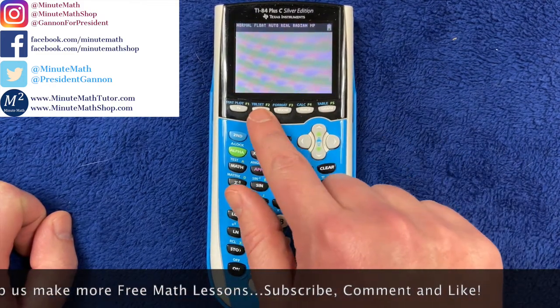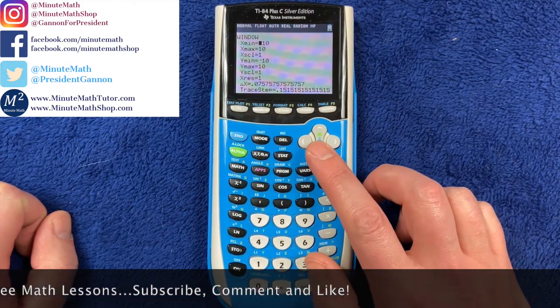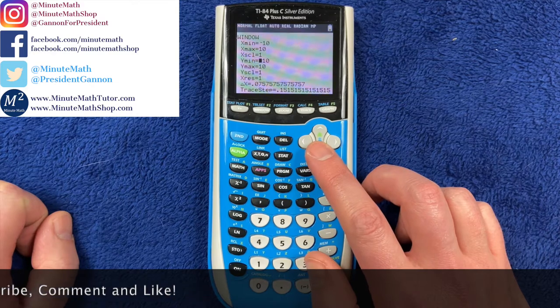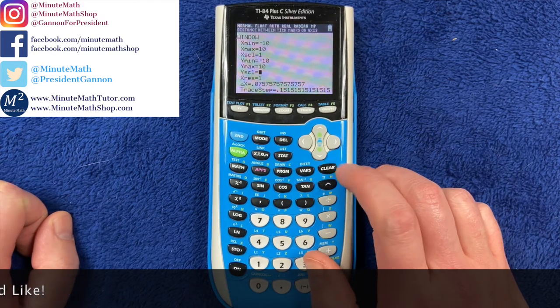So if we press the window button up top, we can see our x minimum is negative 10, x max is 10, and then go down our y minimum is negative 10, and our y max is positive 10.